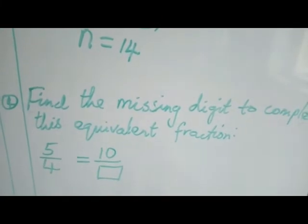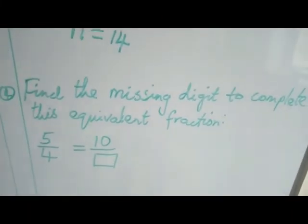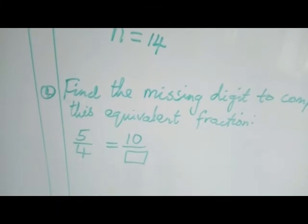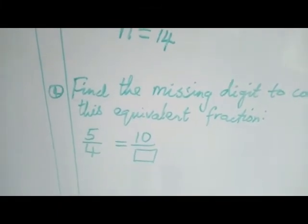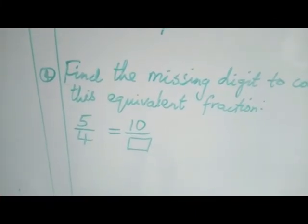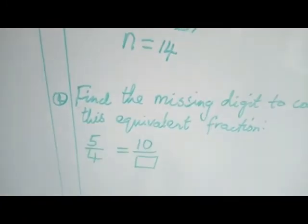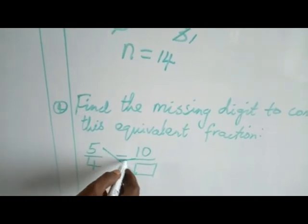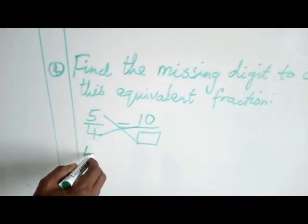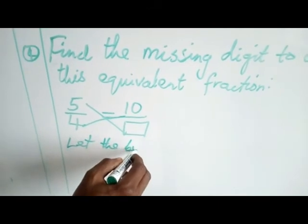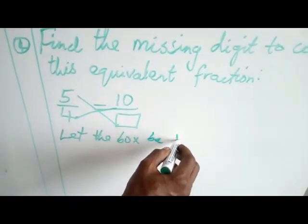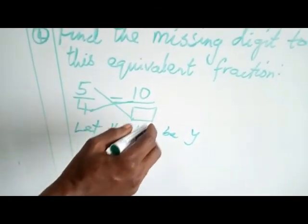The next example is find the missing digit to complete this equivalence fraction. In this case, instead of using n or x, I decided to use the box or the square. That square means unknown. I can decide to use any letter of the alphabet or a square box or whatever to represent the unknown. You still apply the same principle by cross-multiplying. Let the box be y. So I can change my box to become y.